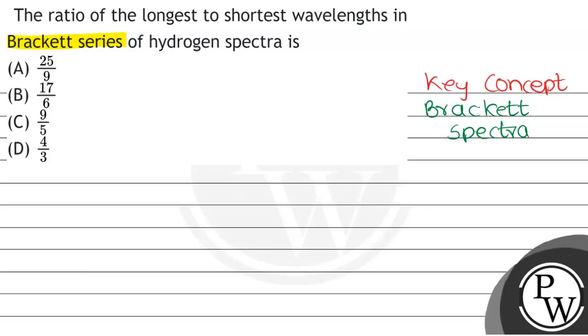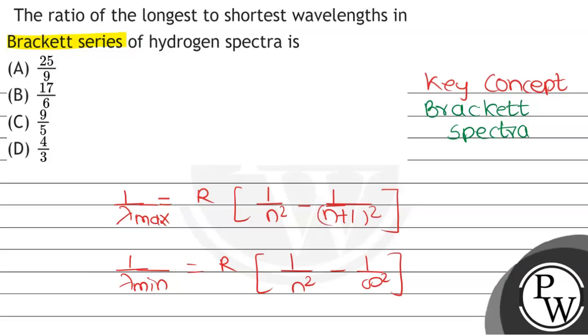We know that in general the wavelength formula is: 1 by lambda equals R, that is Rydberg constant, equals 1 by n square minus 1 by n plus 1 whole square. This is the formula for lambda max. And lambda min formula in general for different series is R equals 1 by n square minus 1 by infinity square.